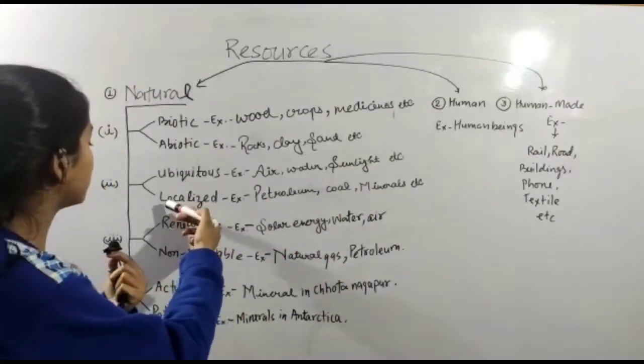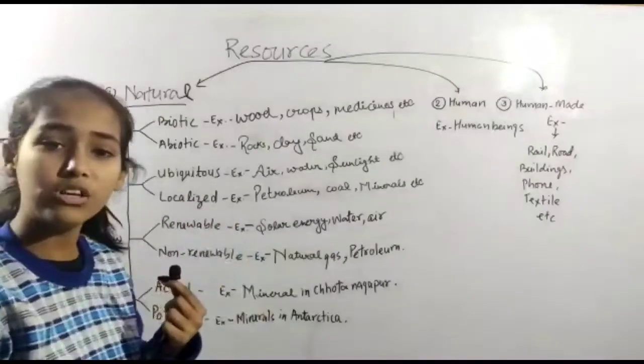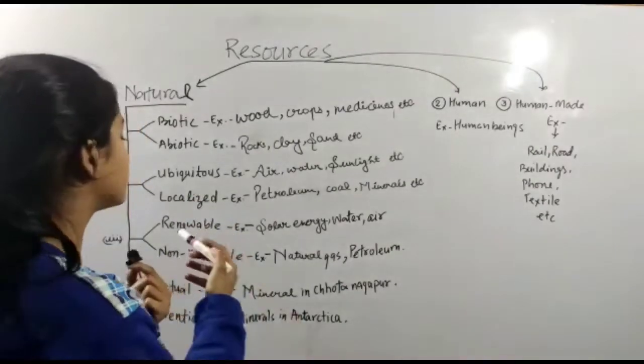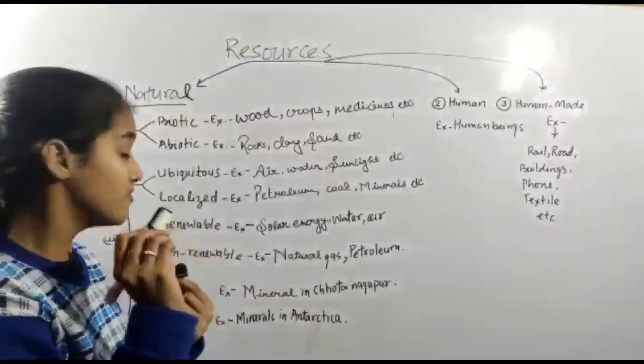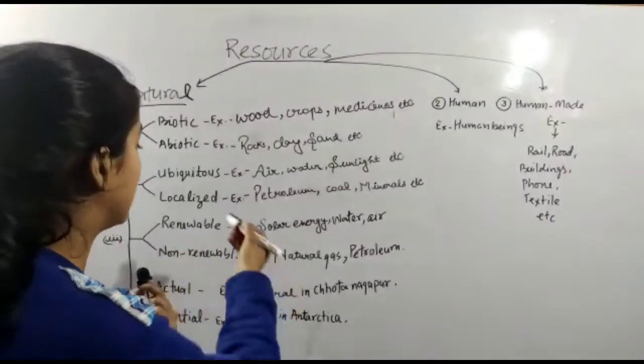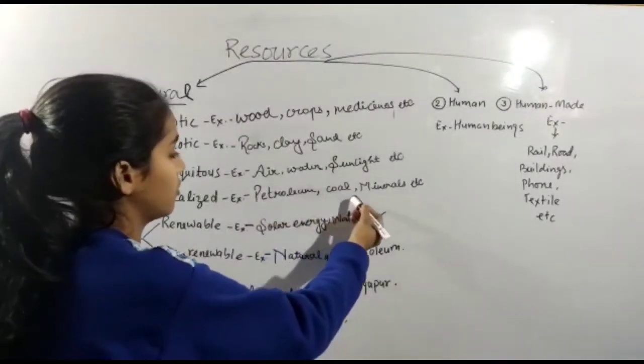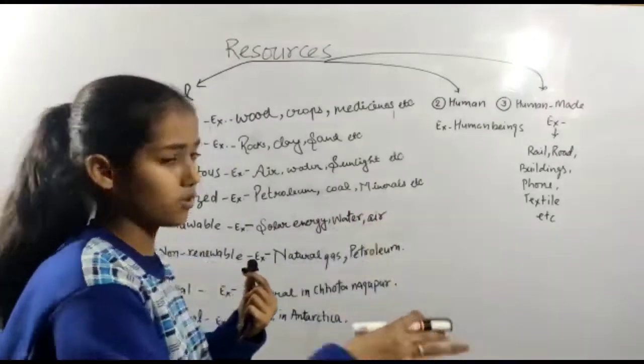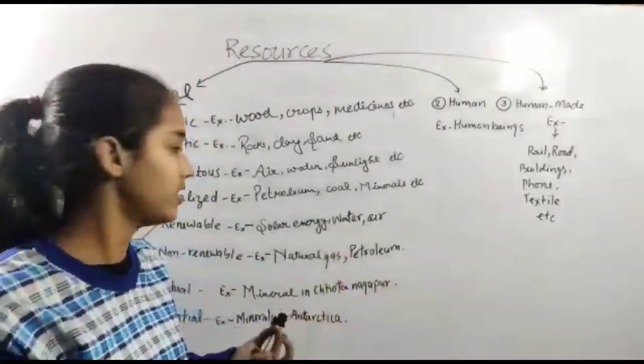And localized - these resources are found in specific places. For example petroleum, oil, minerals. We call it specific places.